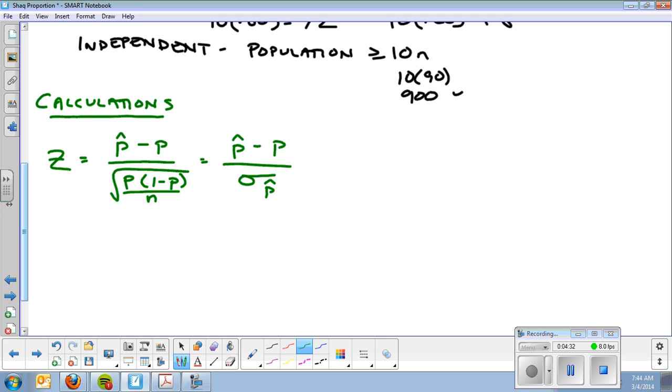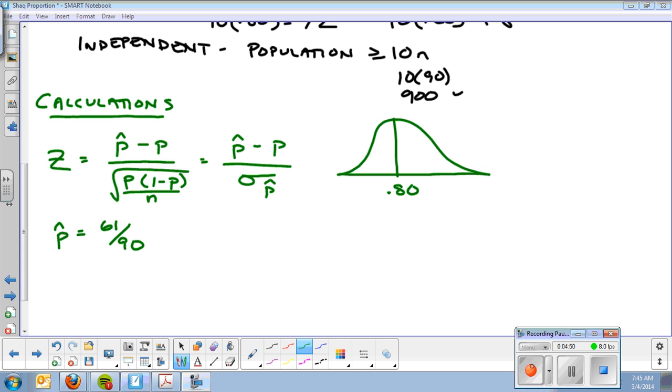We take our graph. We label the middle. So if there's no change, the passing rate should be 80%. We had a P-hat of 61 out of 90, which is .678. So that's going to be somewhere down here, .678. That's my P. That's my P-hat.